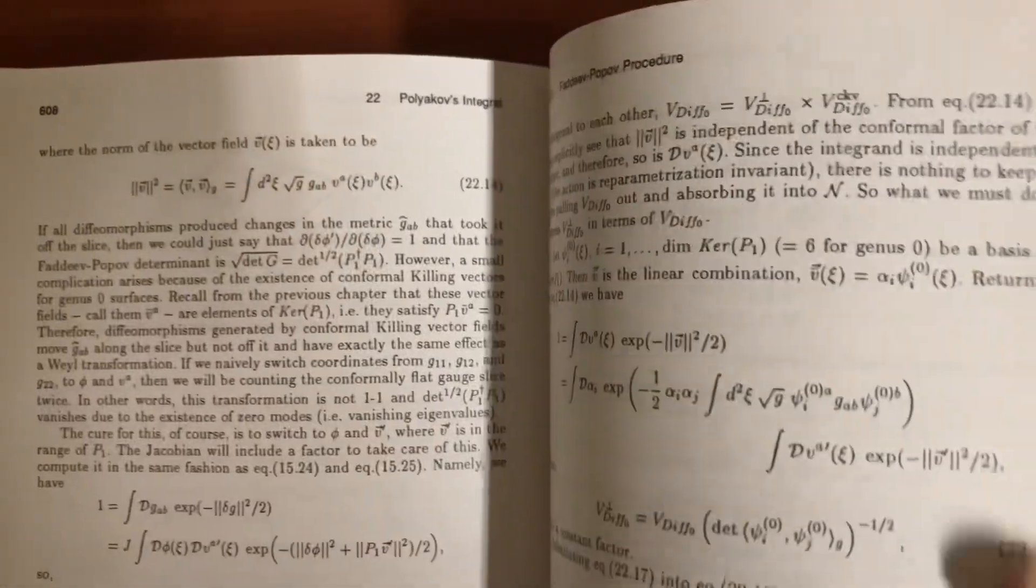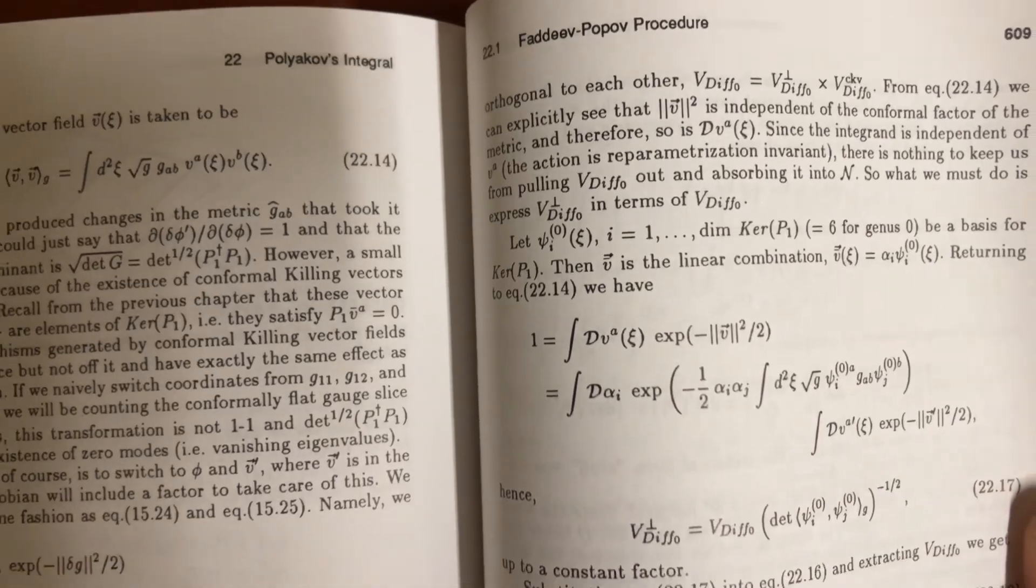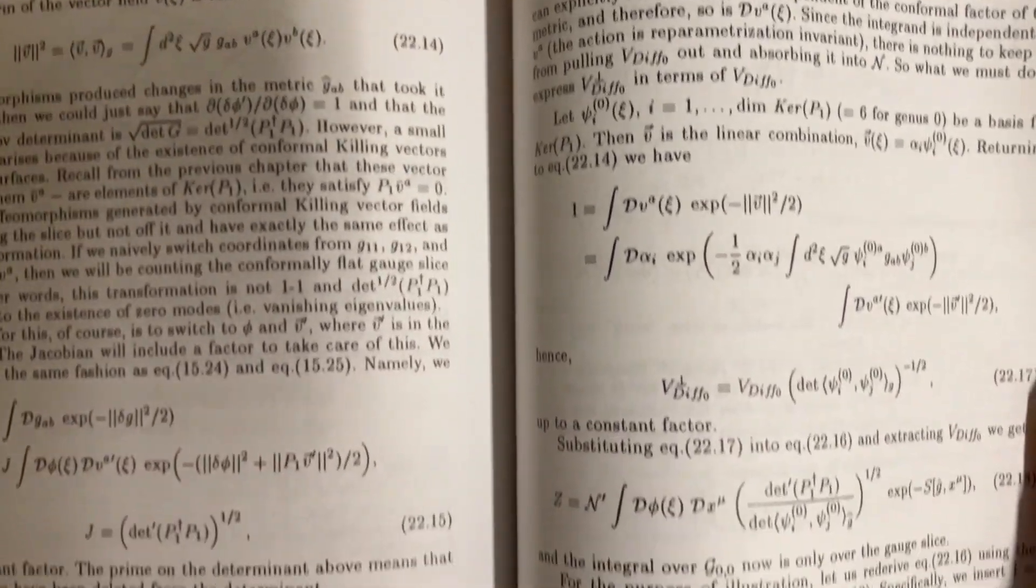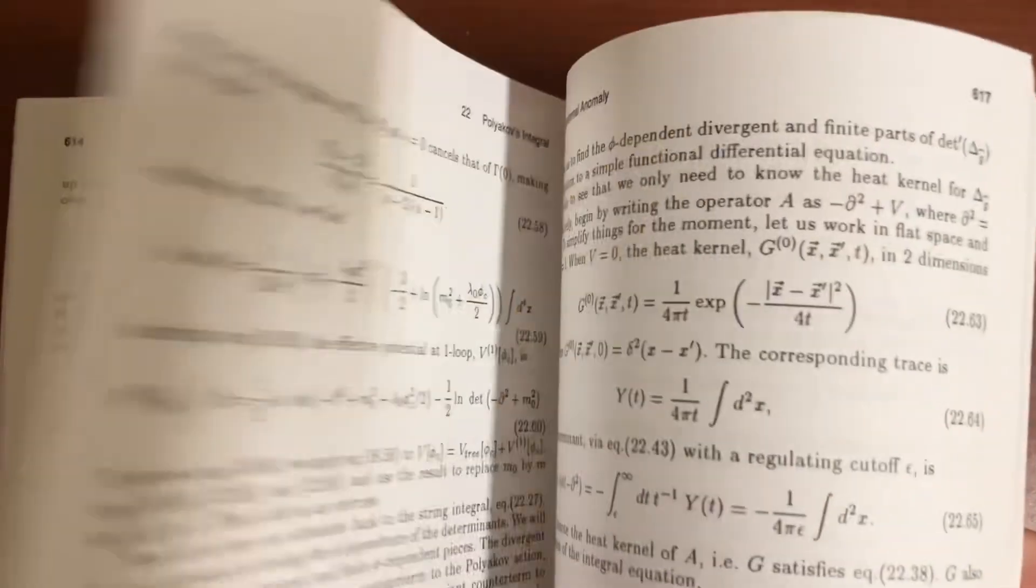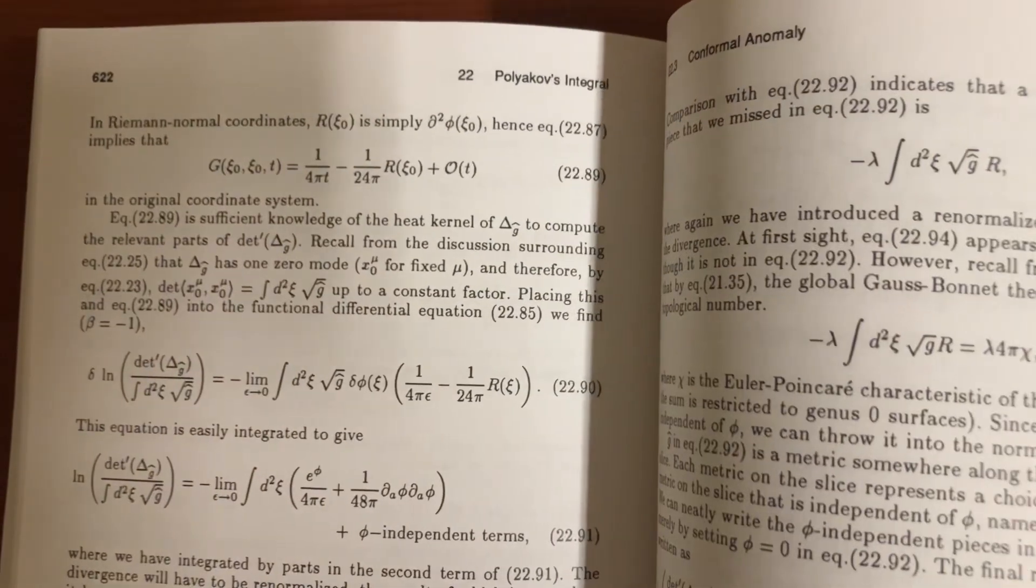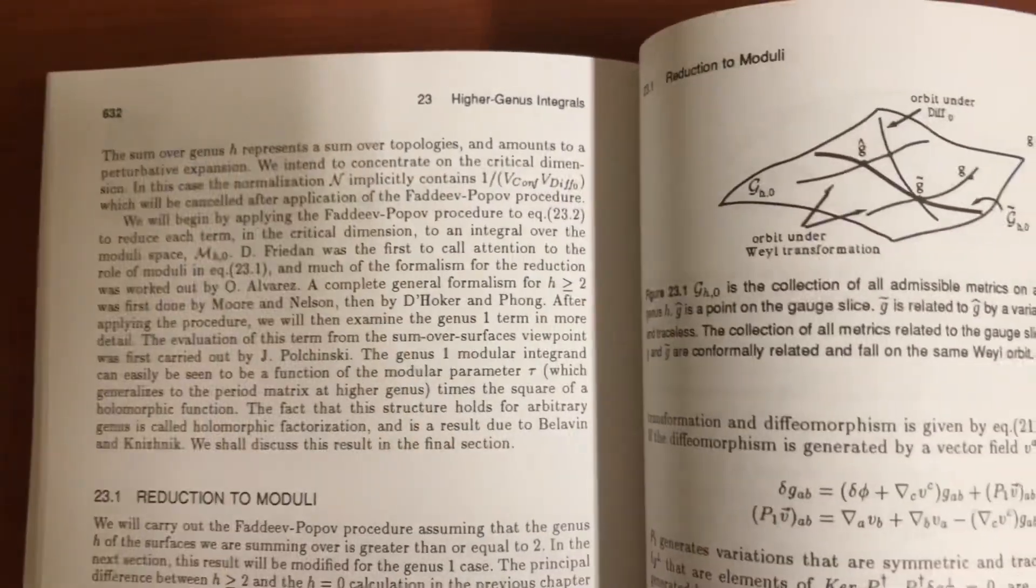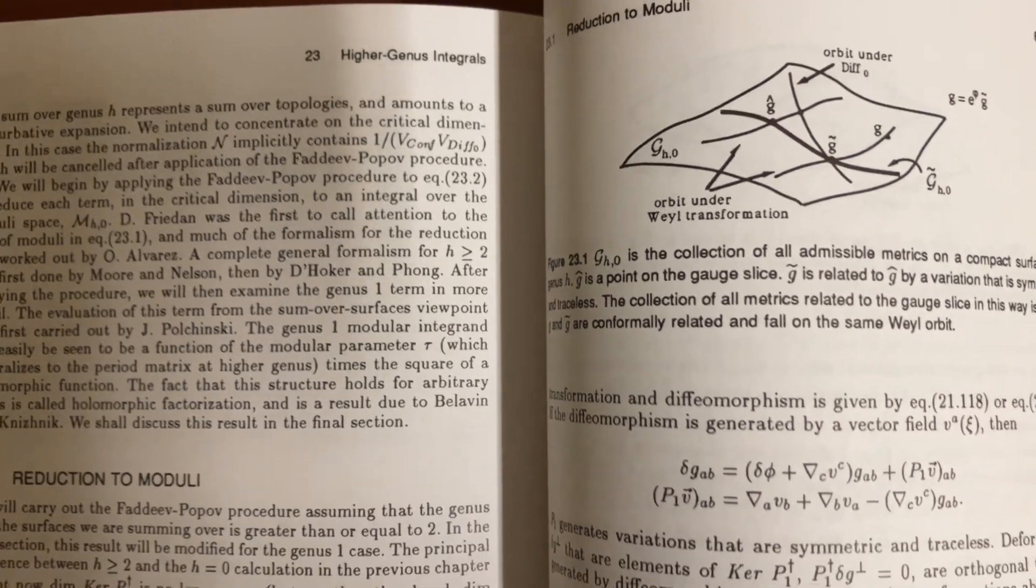And then we have some really weird stuff in the back here. So I don't know what this Faddeev-Popov procedure is. But let's see. So we've got some really crazy integrals that we have to solve. Of course, the hardest stuff is just all these integrals that we have to solve.